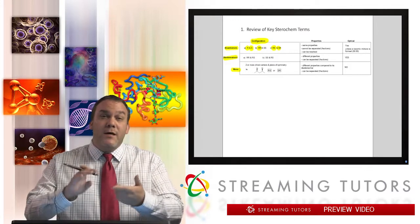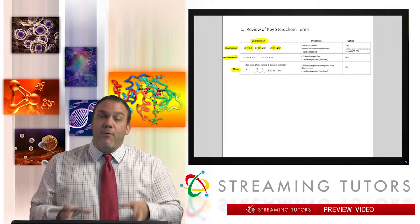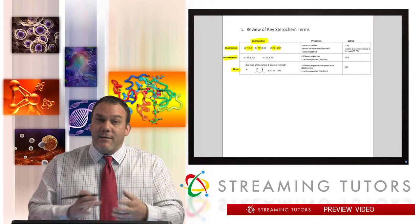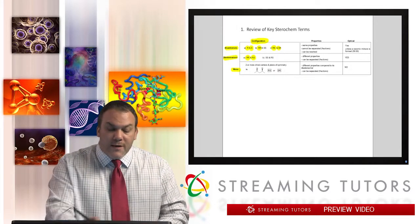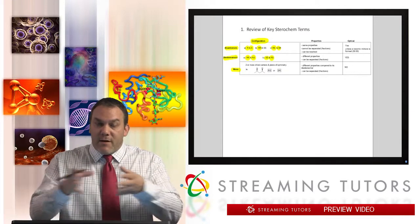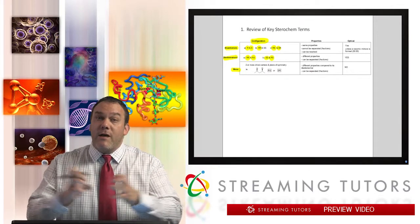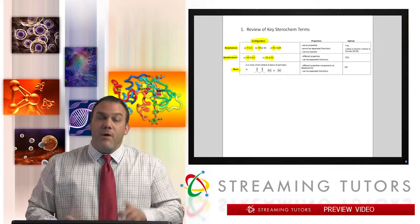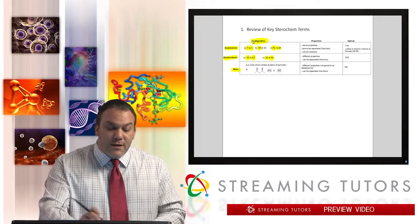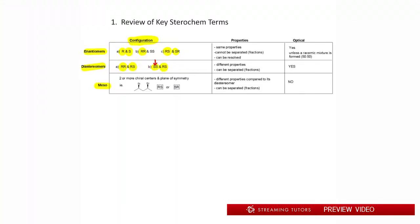For diastereomers — setting aside cis/trans for now — from a chirality point of view, if one molecule is RR and the next is not the opposite SS, but instead RS or SR, then they are diastereomers. So RR and RS, or SS and RS, are diastereomers. Enantiomers are mirror images — like your left and right hands. Diastereomers are not mirror images.